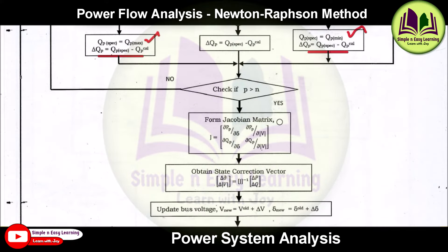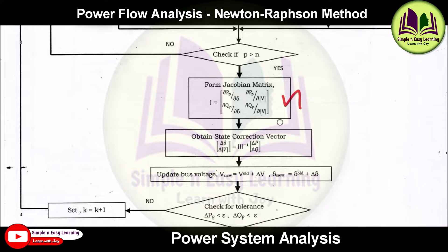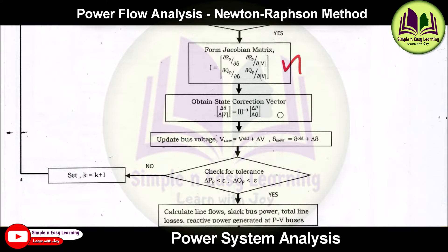After all buses are processed, form the Jacobian matrix in the format: [dP/d_delta, dP/d|V|; dQ/d_delta, dQ/d|V|]. Then obtain the state correction vector — [delta_delta, delta_|V|] = J_inverse * [delta_P, delta_Q].